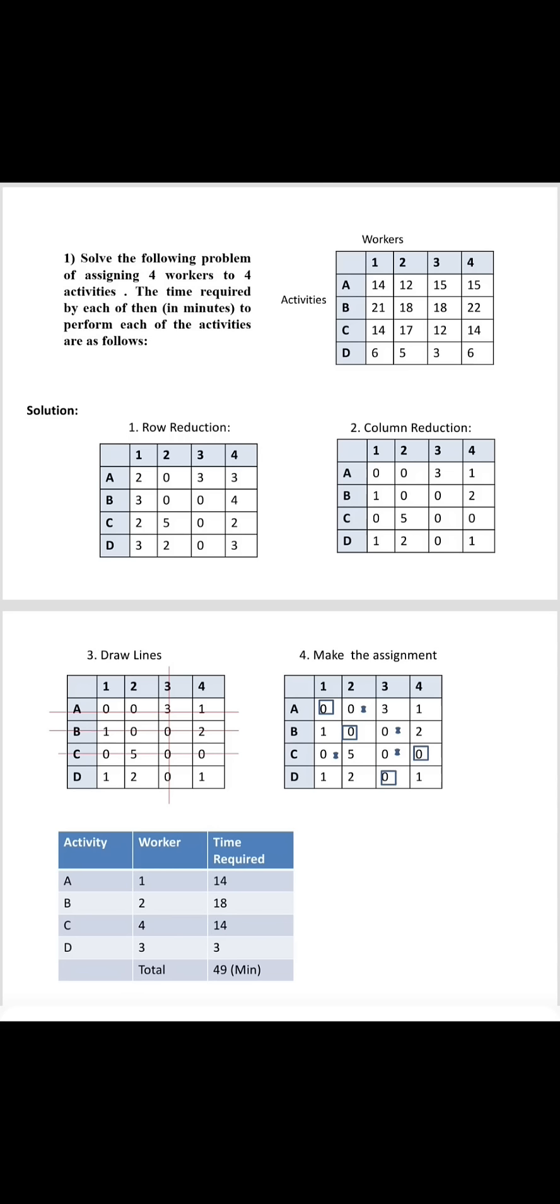For doing this assignment, we are going to use a Hungarian method technique. So as per Hungarian method technique, there are 4 steps for doing the assignment. Step number 1 is row reduction. Step number 2 is row reduction.